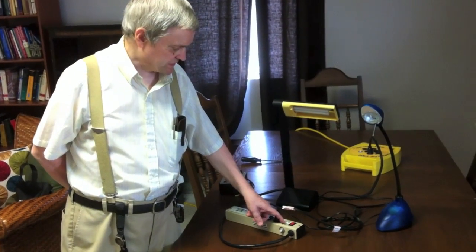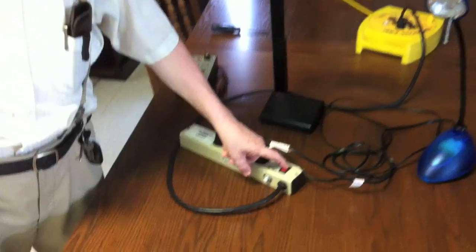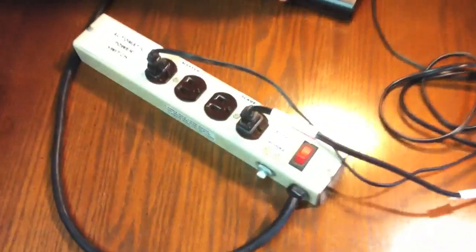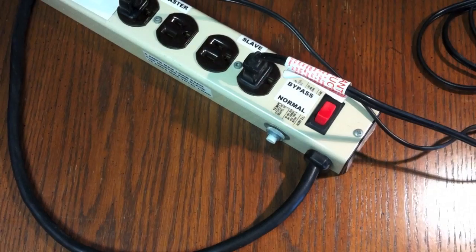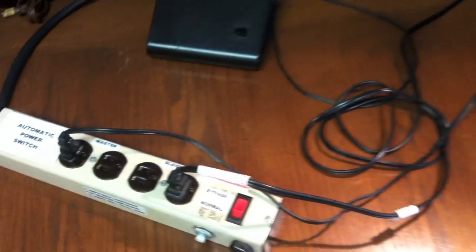Also, it has a bypass switch, what used to be the on-off switch on this outlet strip. When it's in the bypass mode, the slave load will stay on, regardless of the status of the master load. And that's about it.